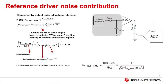For the reference driver noise contribution, we analyze it in RSS fashion — root sum of squares. Everything goes under the square root and is squared, along with the bandwidth and the pi-over-two factor of 1.57. We need to keep the reference driver noise contribution under 12 microvolts RMS.